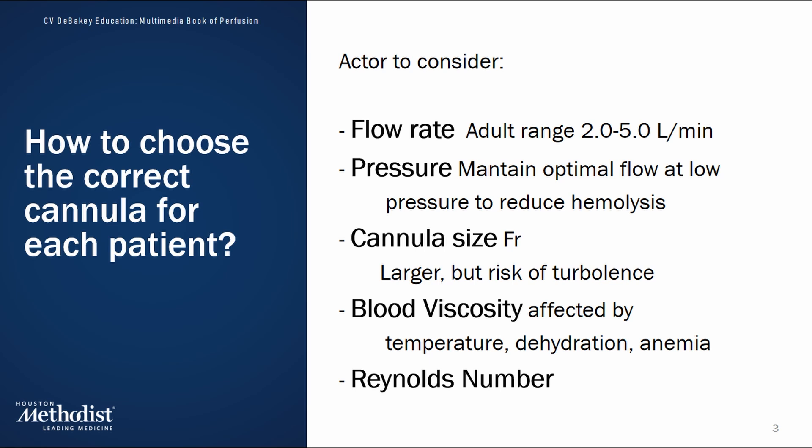So we always aim to deliver the necessary flow at the lowest safe pressure. Then we have size, which is measured in French, where one French equals one-third of a millimeter. Larger cannulas can support higher flows, but if the flow is too high for the size of the cannula, it can lead to turbulent flow, which increases the risk of hemolysis. We also have to consider blood viscosity, which can change due to hypothermia, anemia, or dehydration. Increased viscosity makes blood flow more difficult, resulting in greater resistance and potentially higher pressure across the cannula.